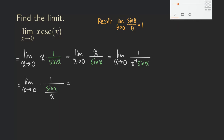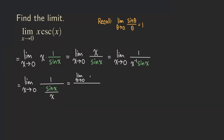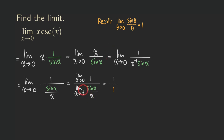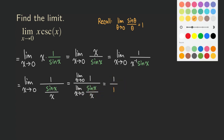We can apply the limit law right here. We get the limit as x approaching 0 of 1, divided by the limit as x approaching 0 of sine x over x. You know that the top is equal to 1, and the bottom is also equal to 1 because of that limit fact — this looks exactly like that one except we're using x instead of theta. So we have 1 over 1, which is equal to 1.